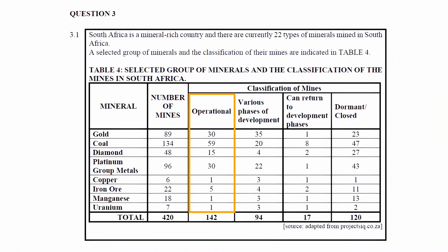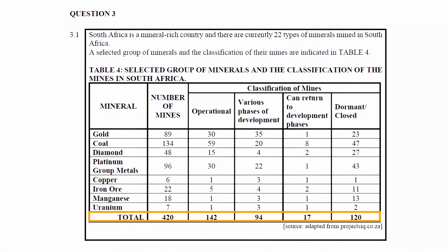The third column lists the number of operational mines, the fourth column lists the number of mines in various phases of development, the fifth column lists the number of mines that can return to development phases, and the sixth column lists the number of dormant or closed mines.